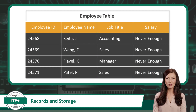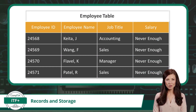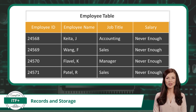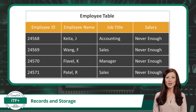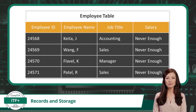In a human resources database, an employee record might include fields such as the employee ID, employee's name, job title, salary, or any other necessary information pertaining to each employee. Each record therefore represents a unique employee within the organization.